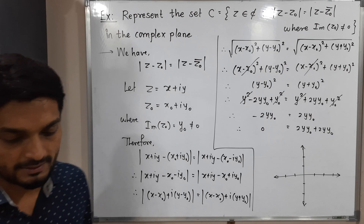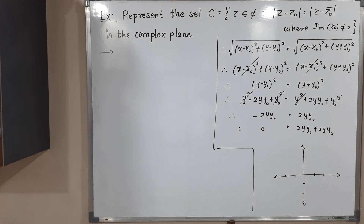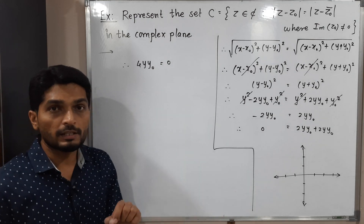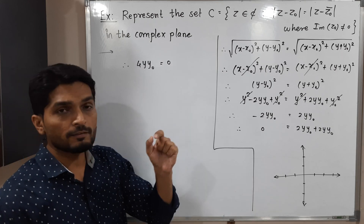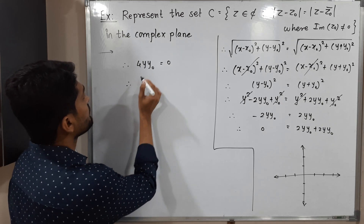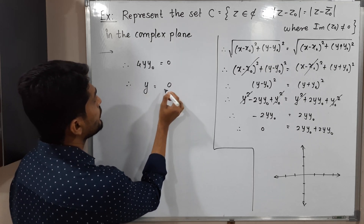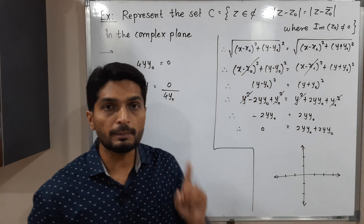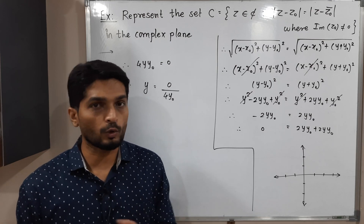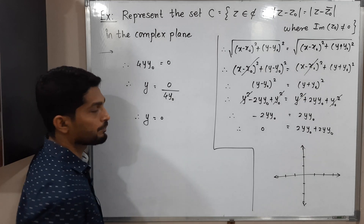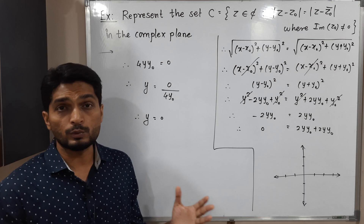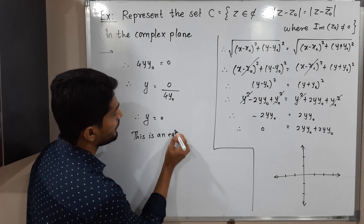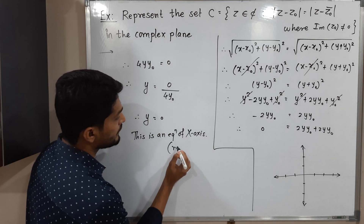So we have 4yy₀ = 0. Since 4 is a constant and y₀ is also a constant (Z₀ is a fixed complex number), we can write y = 0 / (4y₀). Since the imaginary part of Z₀ is nonzero, y₀ ≠ 0, so we can divide by it without issue. Therefore y = 0.